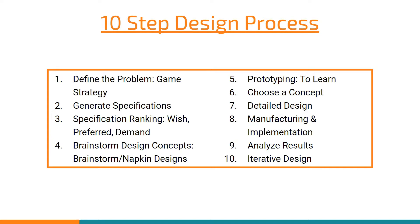Iteration is a key part of the 10-step design process. Iteration is what allows us to learn and get better. After we know what works and what doesn't work, we have to apply it — we prototype again, we choose new better concepts, we design and manufacture them again, and then we continue to analyze. This loop repeats up until the retirement of our robot, and in real life it repeats forever.